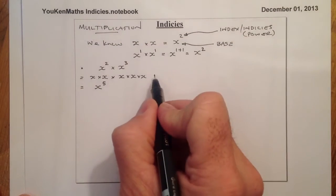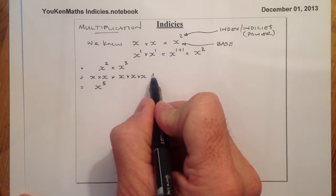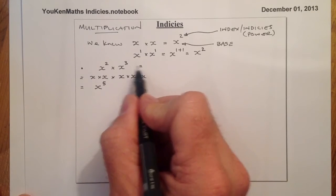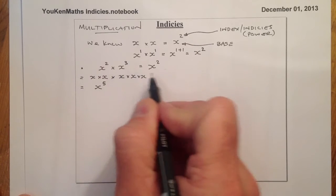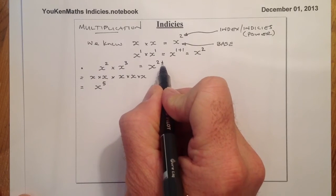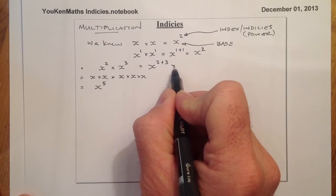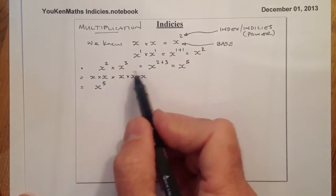So remember from up above, the kind of way that works there is I've got x to the power of 2, I'm multiplying by x to the power of 3. So I'm going to add the indices and that gives me x to the power of 5.